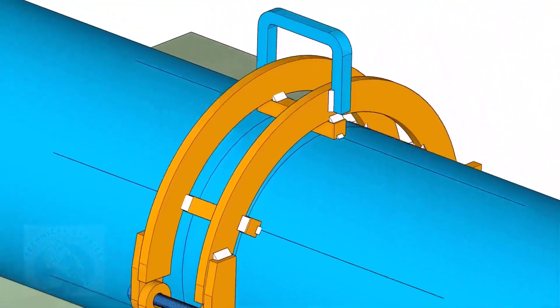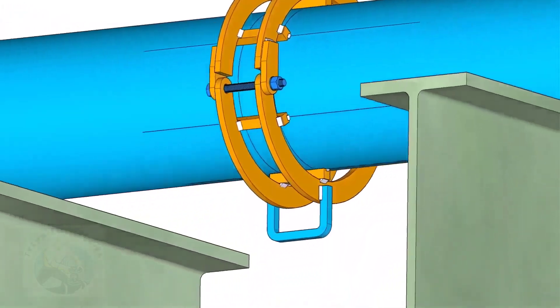After welding, cut the tacks with pipe and the square bars. Grind smooth all parts.